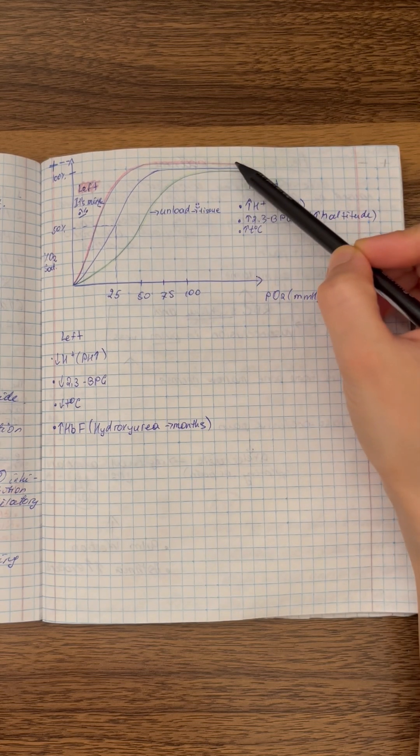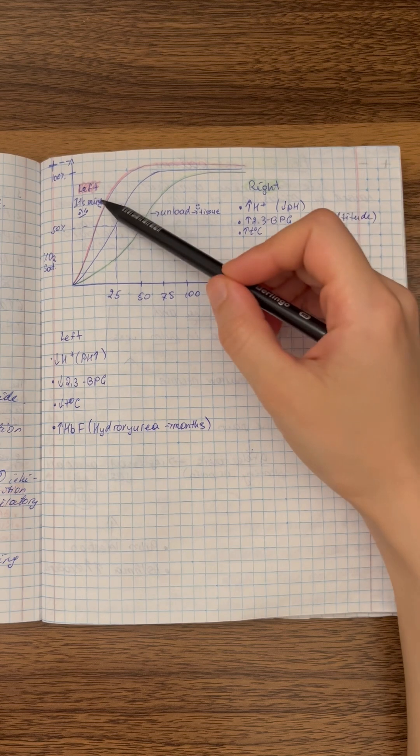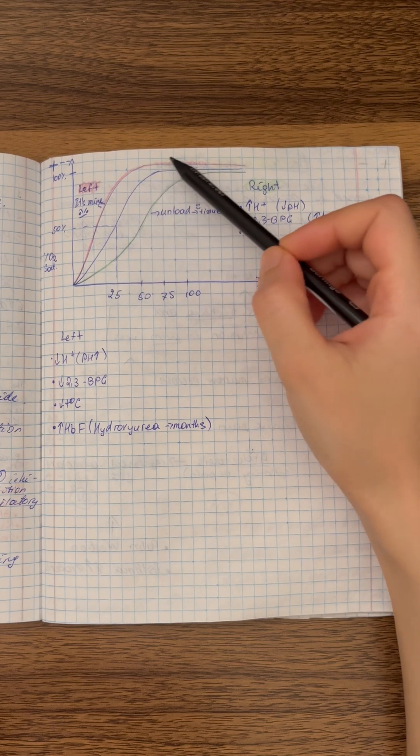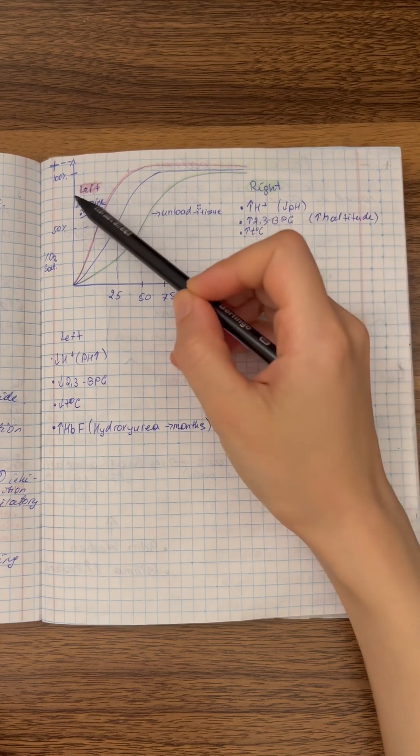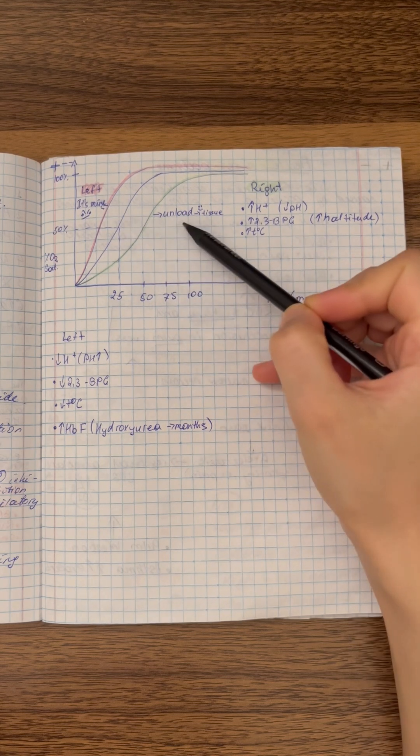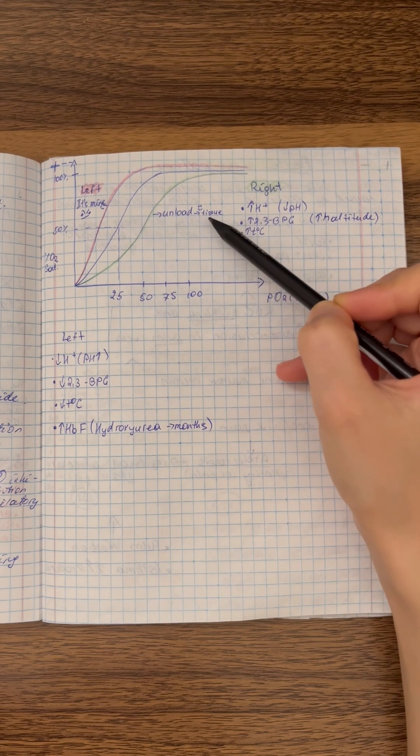We will talk about left shift and right shift. Left shift means that hemoglobin is not giving oxygen to tissues. It says it's mine. But if it is right shift, the green one, it means that it gives oxygen to the tissue.